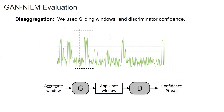For GAN-NILM during deployment, the input is a long sequence of aggregate measurement, which should be segmented using overlapping sliding windows equal to the size of the model input. The problem here is that overlapping areas will have more than one prediction. Some literature proposes averaging those multiple predictions, but we approach this differently by exploiting the discriminator part instead of throwing it away. After training GAN-NILM, the discriminator assigns probability values to each generated appliance based on how likely the prediction is to be real. For each sliding window, the generator outputs a prediction, and the discriminator calculates the probability of that prediction being real, allowing us to use these probability values to determine the most likely prediction.